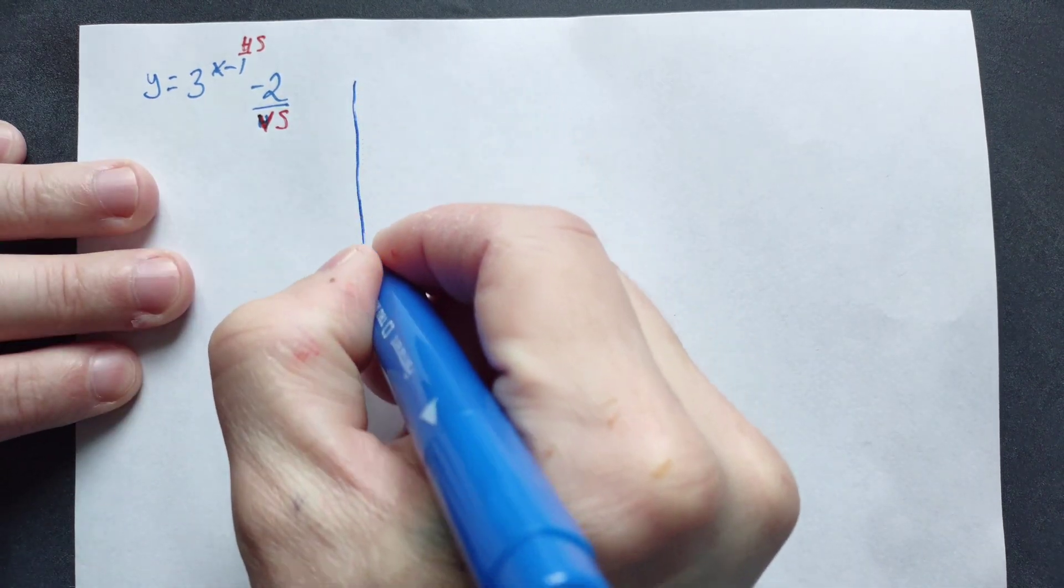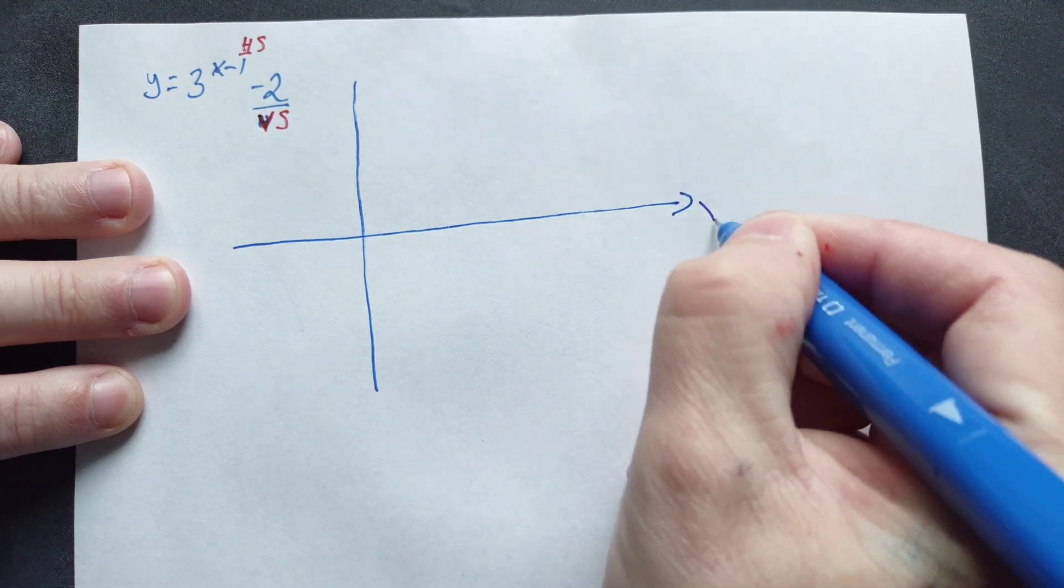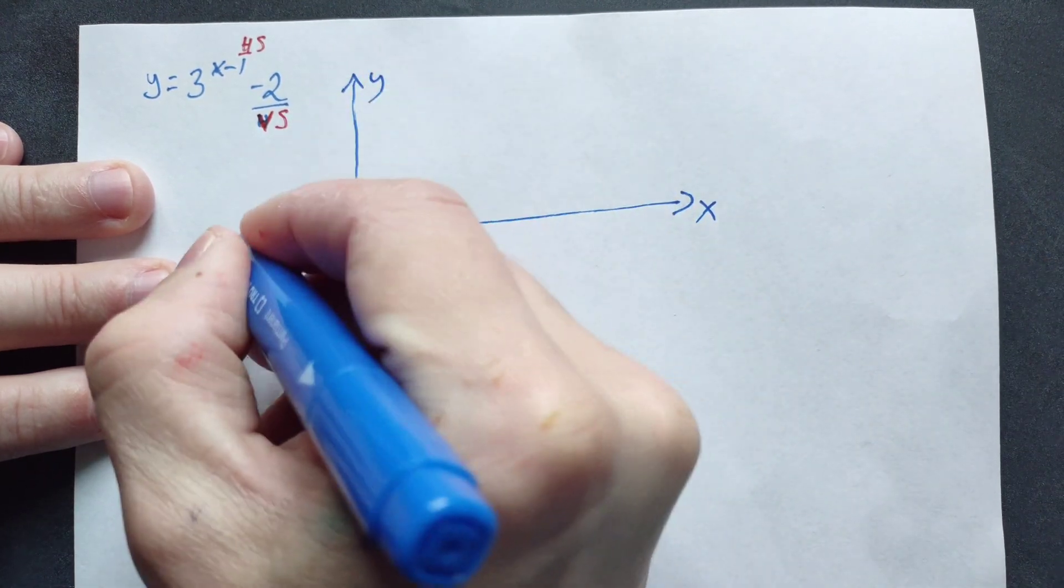Let's do a quick sketch. Draw a basic coordinate system in here by hand. So we'll call this x, we'll call this y as usual.